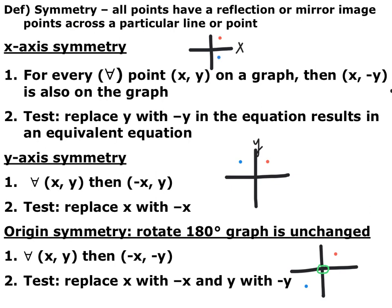The way we test x-axis symmetry is we replace every y with a negative y in the equation and see if it simplifies down to an equivalent equation. The next thing we look at is y-axis symmetry. For every (x, y) point you have, the negative x, y also exists. So you have the same y-coordinate but opposite x-coordinates. The test for that is you replace every x with a negative x and see if it simplifies down to the same equation.